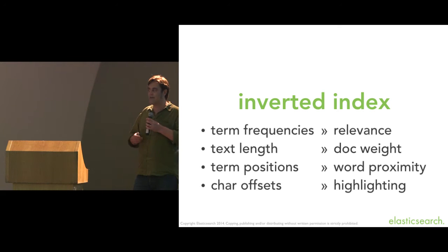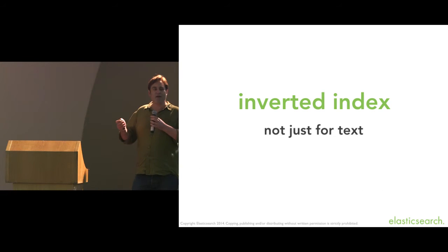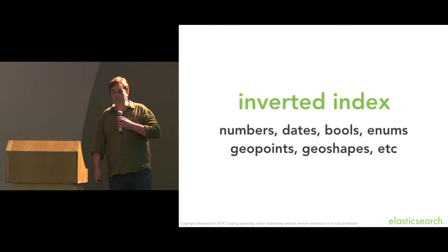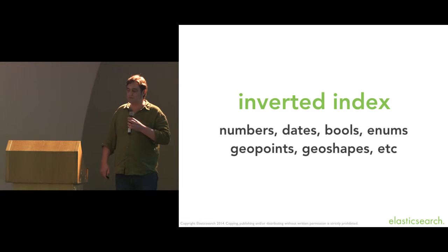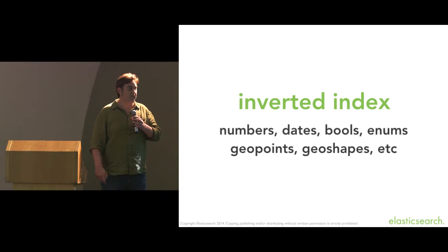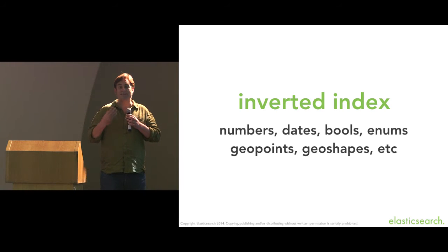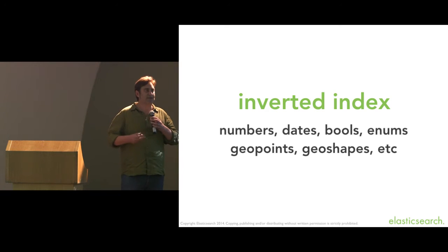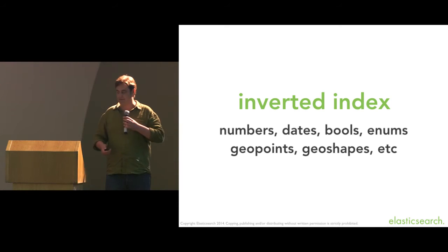The inverted index is not just for text. It works just as well for numbers, dates, booleans, enums, geopoints, and geoshapes. So the same approach we use to make text searchable, we can use for unstructured data like prices, dates, or locations.